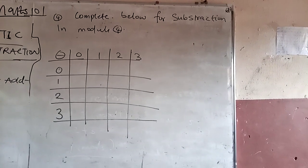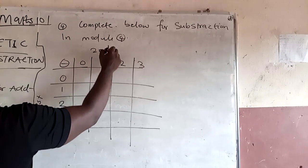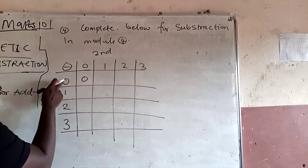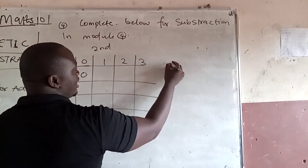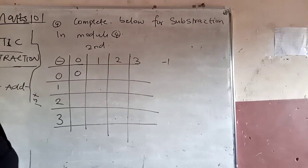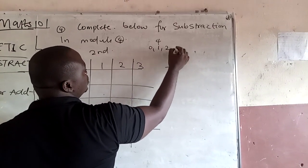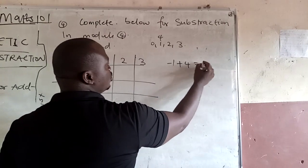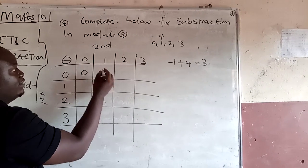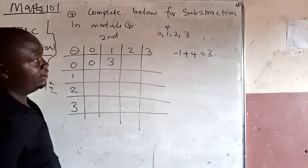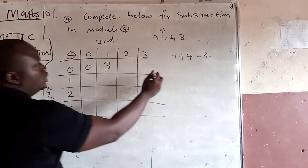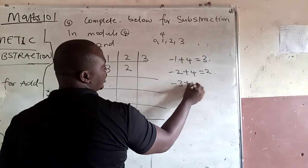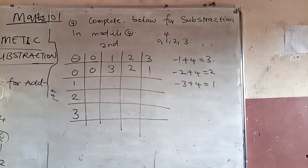This is the first side and this is the second side. I'm going to be subtracting the second from the first. Remember, this is in modulus 4, so the range is 0, 1, 2, 3 — there are no negatives here. 0 minus 0 will give you 0. 0 minus 1 is minus 1. But since we can't have negatives, we add 4: minus 1 plus 4 is 3. 0 minus 2 is minus 2, plus 4 gives 2. 0 minus 3 is minus 3, plus 4 gives 1.